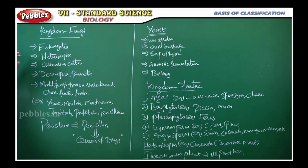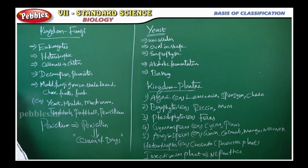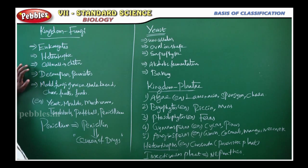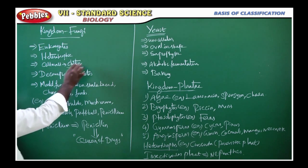Fungi are mostly eukaryotes. What do you mean by eukaryotes? It is a multicellular organism. And these fungi are heterotrophic, which means they depend on other organisms. The cell wall of fungi is made up of chitin. Normally in plants it is called cellulose, but in fungi the cell wall substance is chitin.